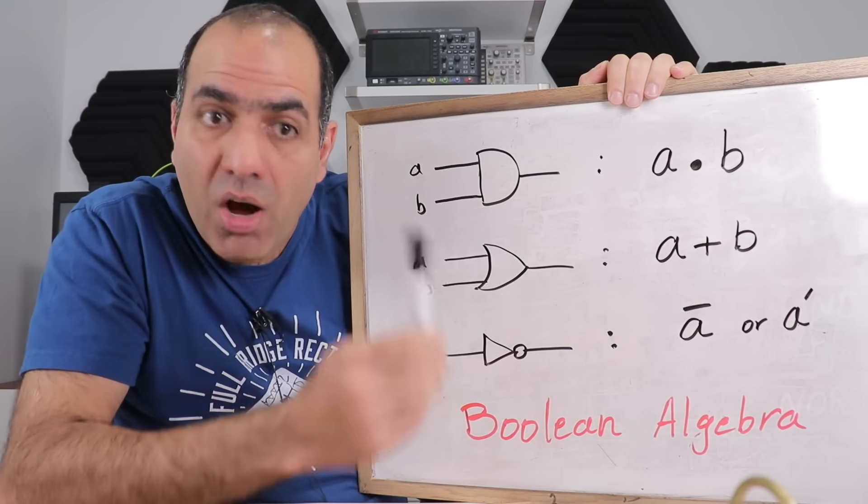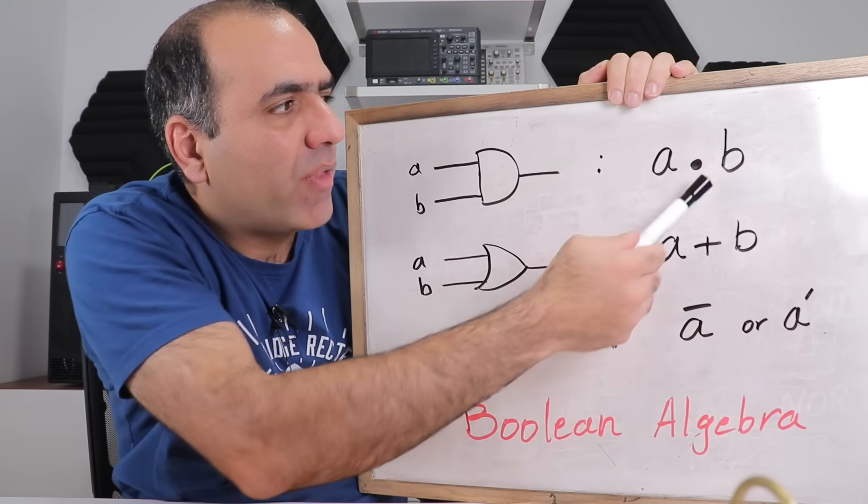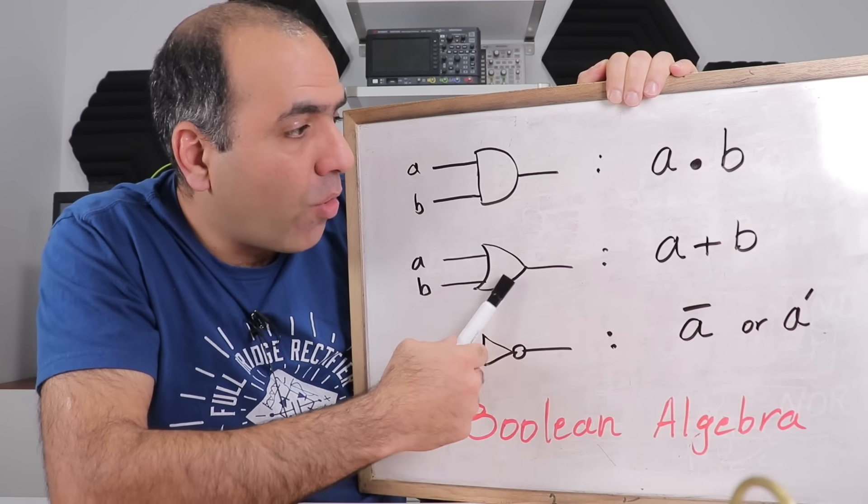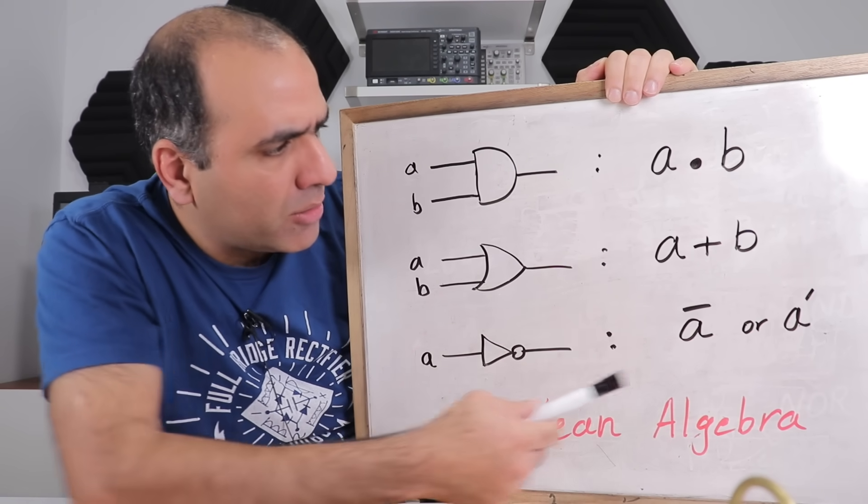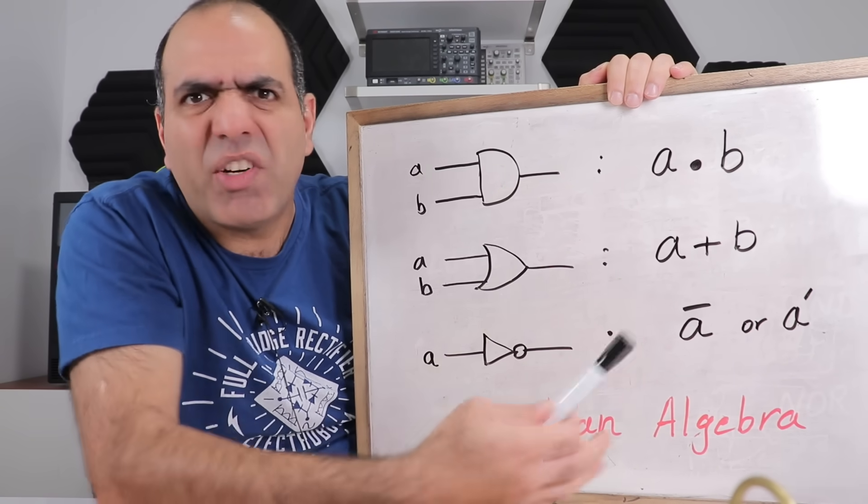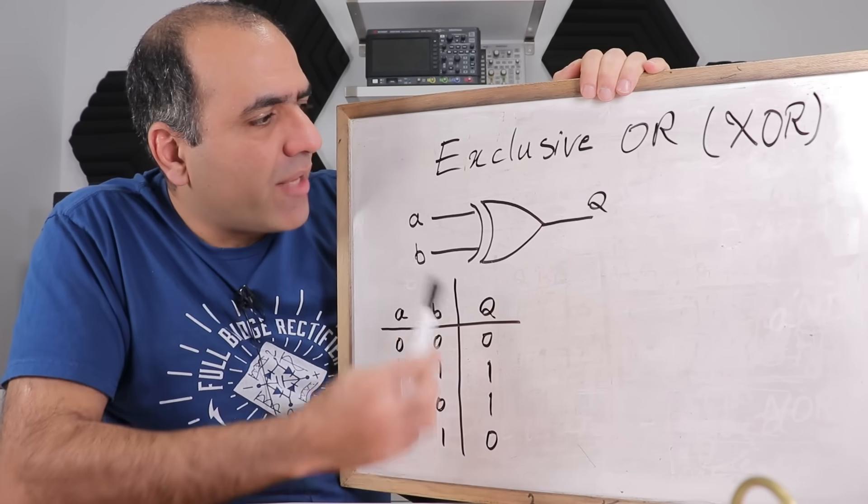And we can write our logic in the form of algebra called Boolean algebra, where we show AND with a dot like multiplying, OR with a plus, and NOT with a bar or a prime or whatever floats your boat. I use bar.